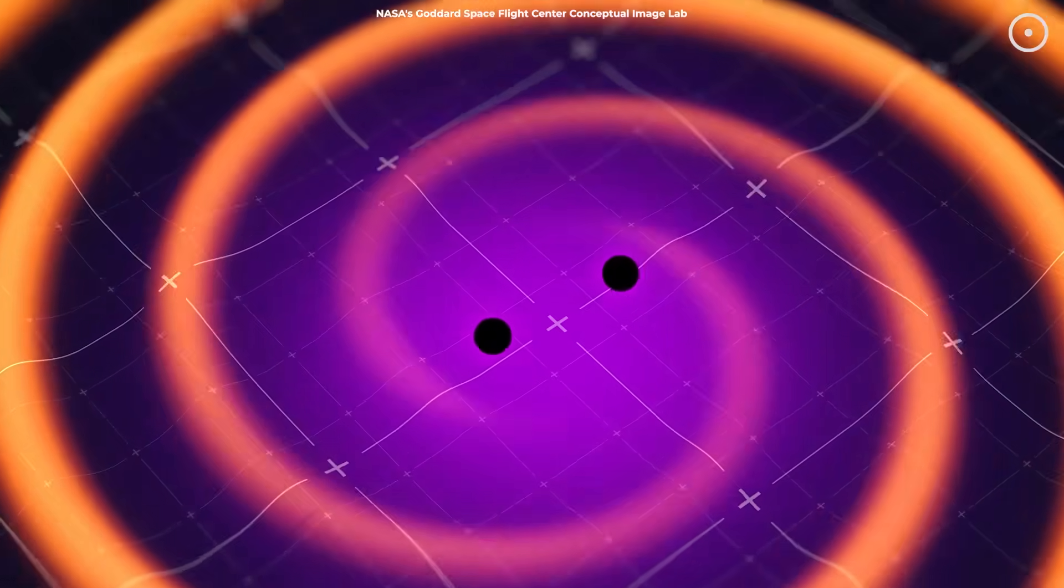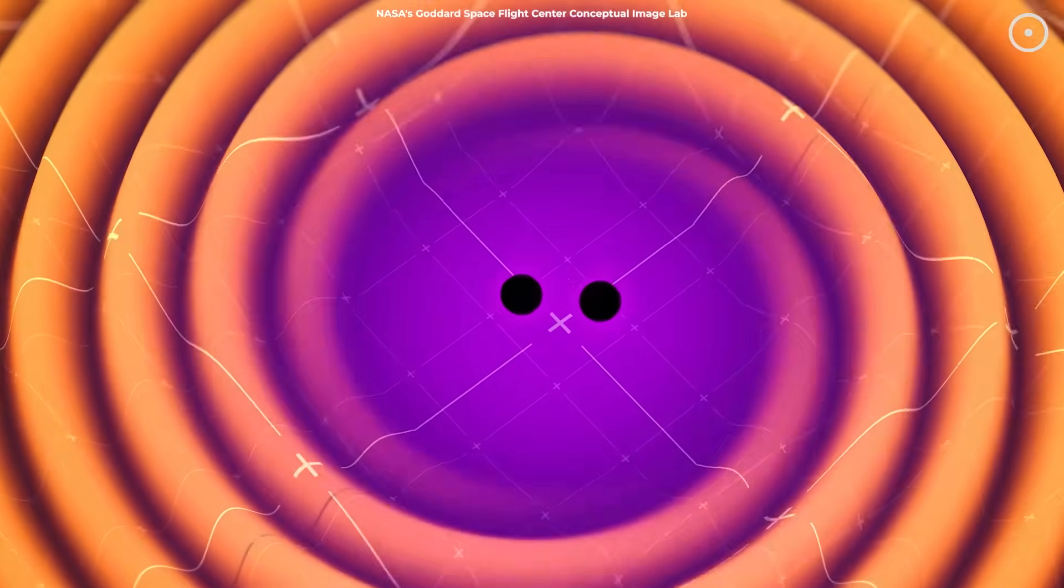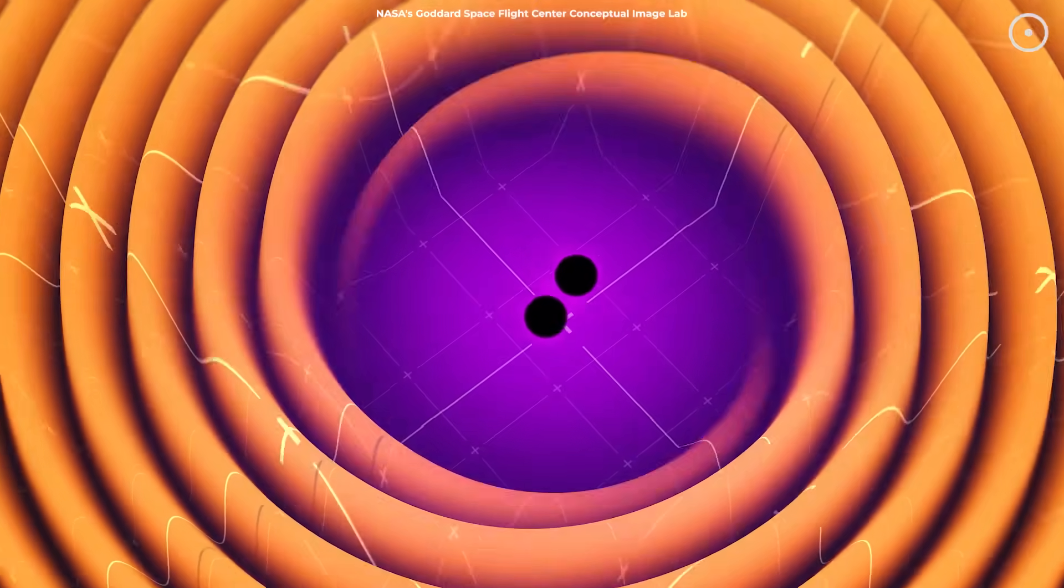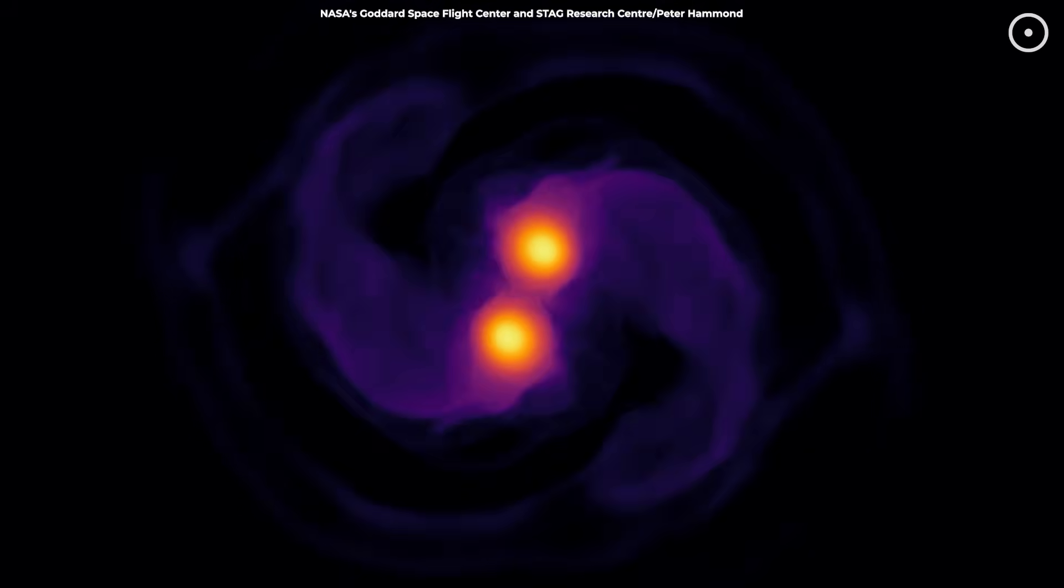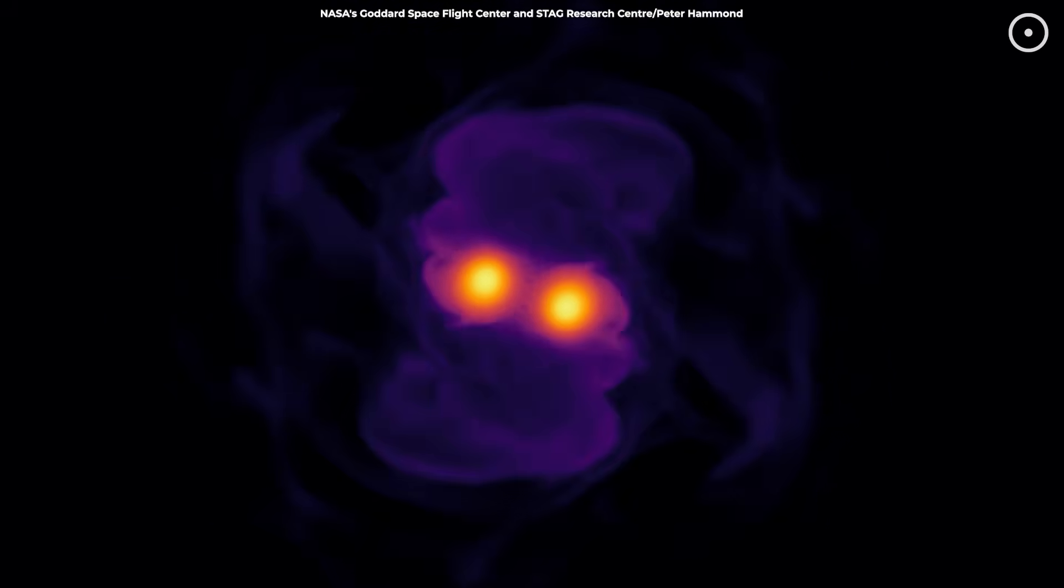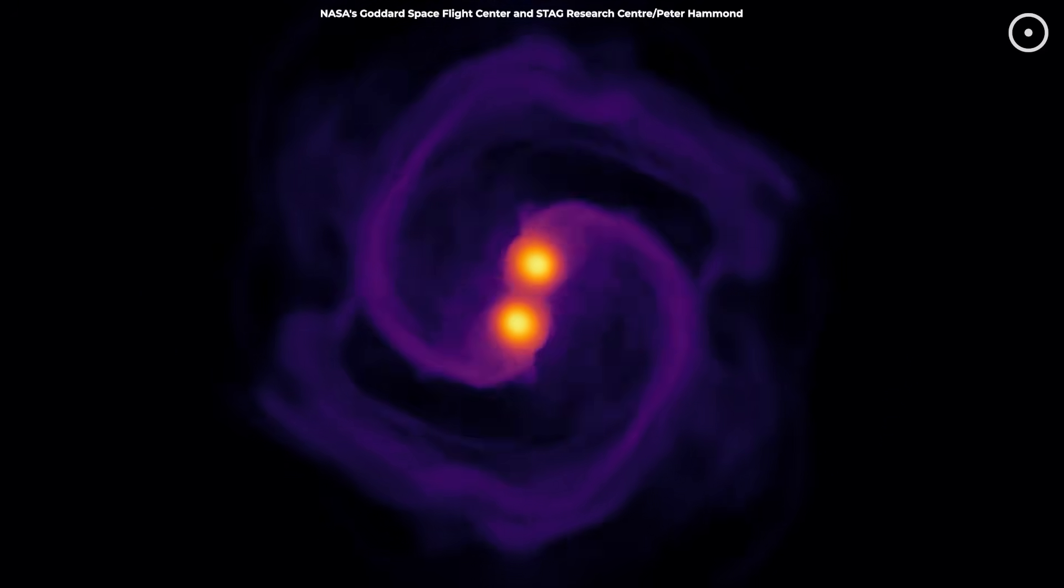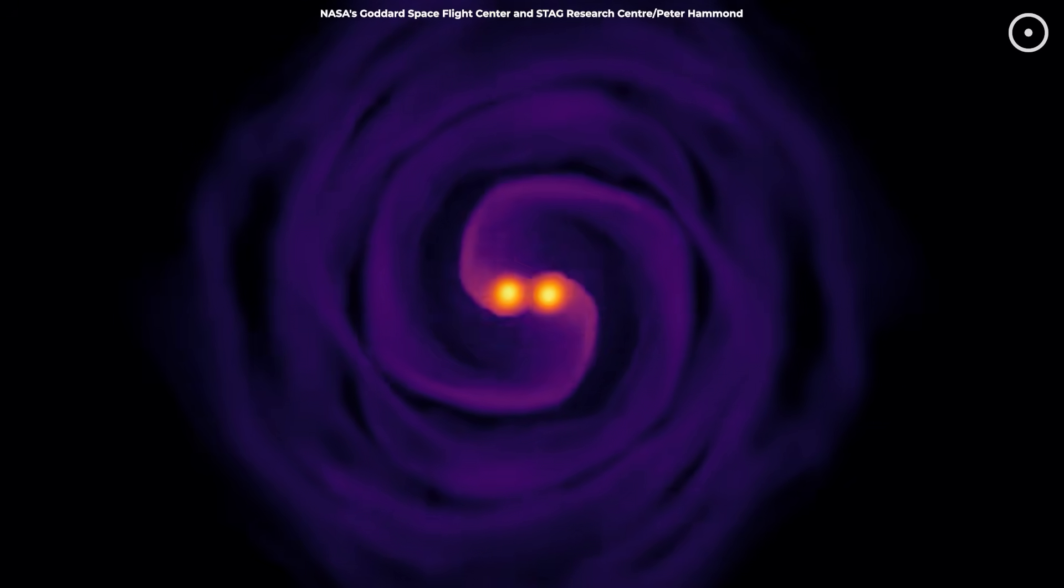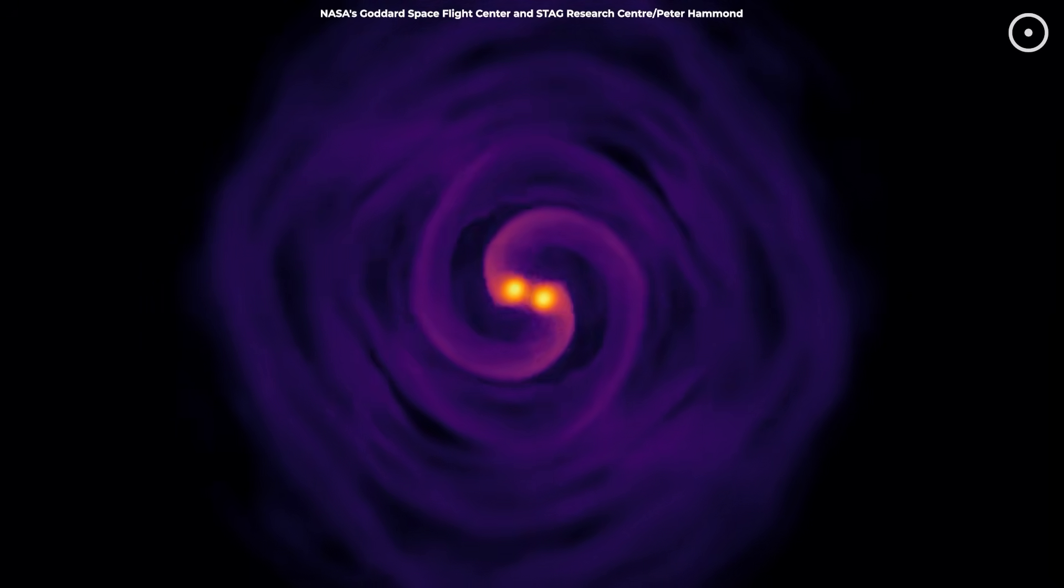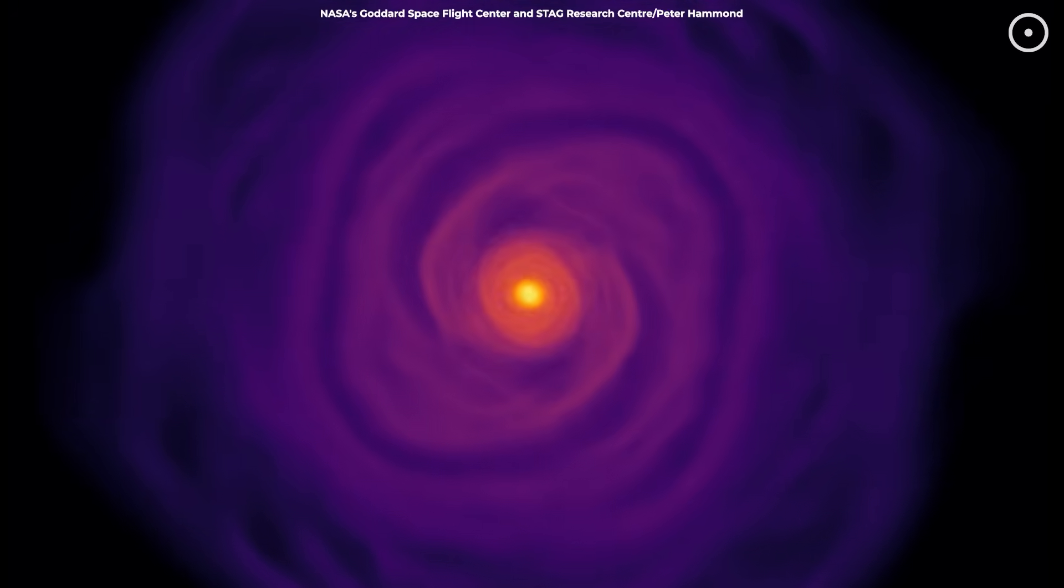But if you think black hole jets are intense, wait until you hear what happens when two black holes collide and send ripples across spacetime itself. Two black holes locked in a cosmic dance will spiral closer and closer together. As they orbit, their immense gravity sends ripples through the very fabric of spacetime. These are called gravitational waves. And when they finally collide, it's one of the most powerful events in the universe.